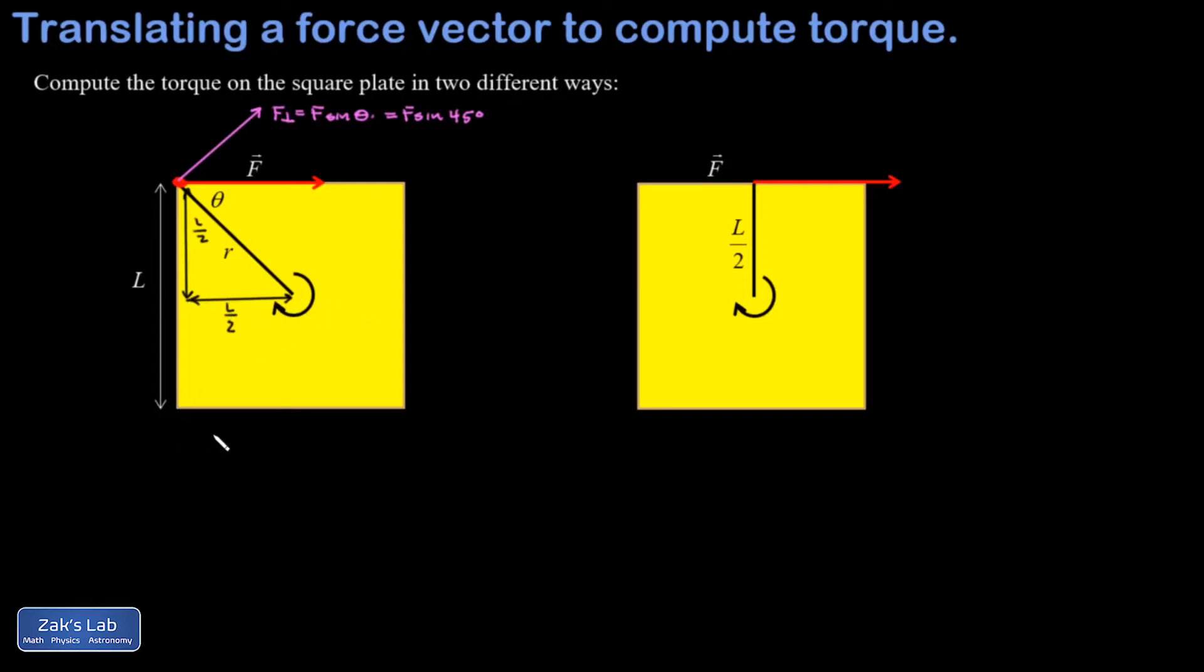Now we have to use the Pythagorean theorem to find R. So R is the square root of L over 2 squared plus another L over 2 squared. That's the square root of L squared over 4 plus another L squared over 4, which gives me L squared over 2 in the square root.